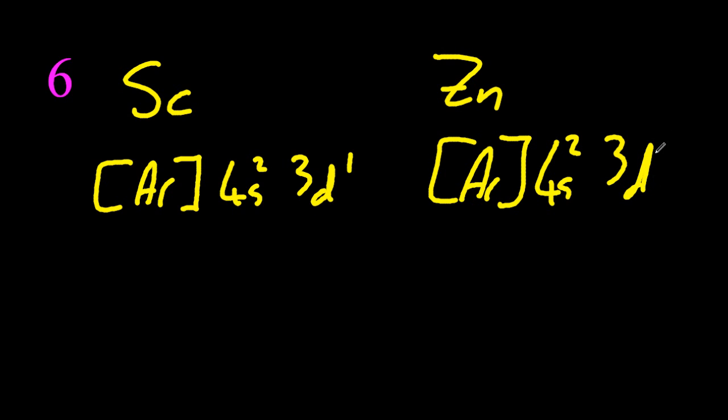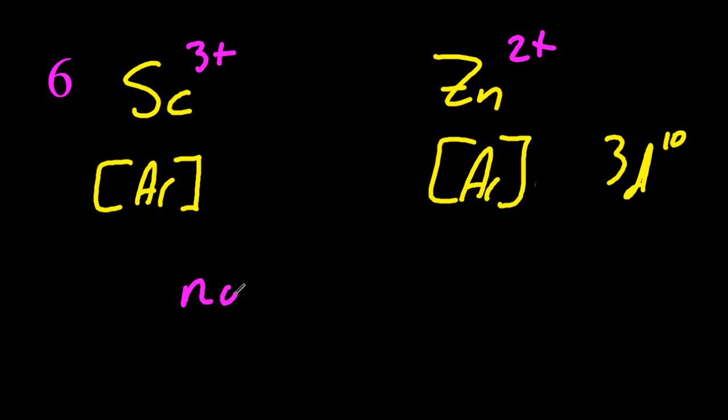Scandium and zinc are not traditional transition metals. They don't have multiple oxidation states. They're not catalysts. They don't have colored compounds because they have an empty or a full D block when they are ions.